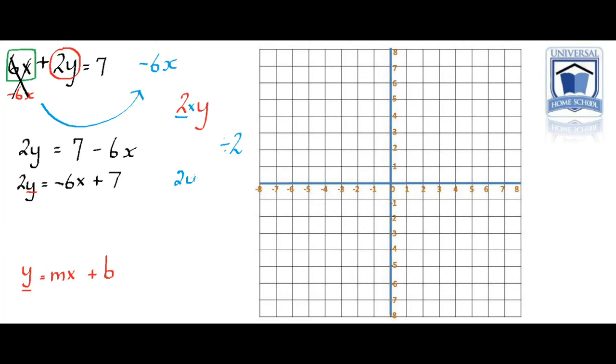Because y multiplied by 2 equals 2y, so 2y divided by 2 would equal 1y. And don't forget, 1y is the same as y. We just don't put the 1 in front of it.